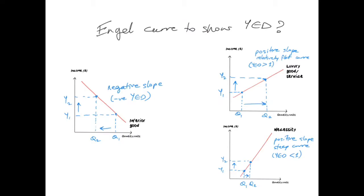Economists use something called the Engel curve — E-N-G-E-L curve — to show income elasticity of demand. An Engel curve shows the relationship between income on the Y axis and quantity demanded on the X axis. An inferior good will have a negative slope because the value of YED will be negative. As you can see, when income increases from Y1 to Y2, quantity demanded decreases from Q1 to Q2.